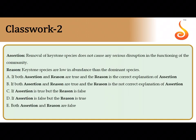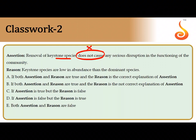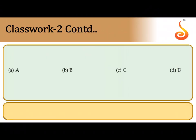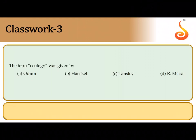The second assertion-reason question says removal of keystone species does not cause any serious disruption — this assertion is false, because removing a keystone species would entirely crumble the ecosystem. The reason states keystone species are low in abundance, which is also not necessarily true — they may be very high in abundance or themselves be the dominant species. So both assertion and reason are false, and the correct answer is the last option.